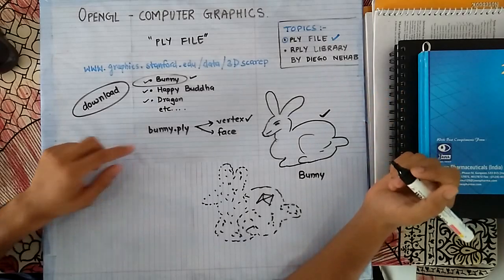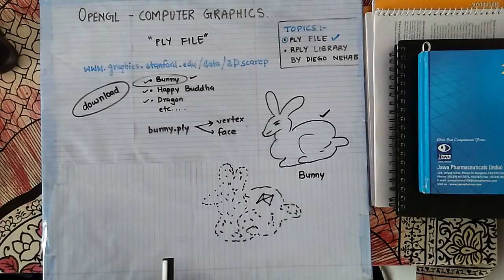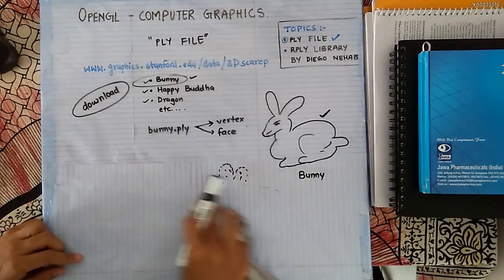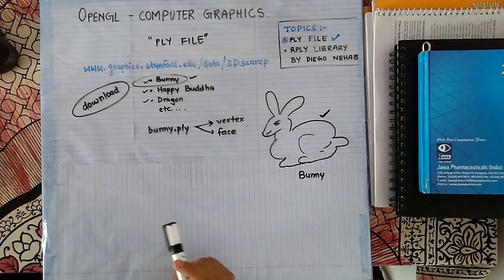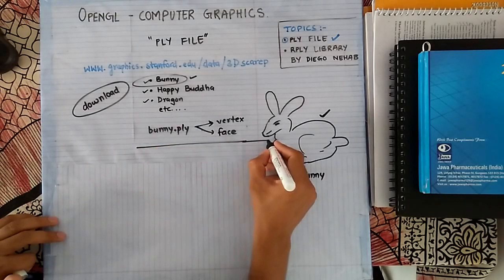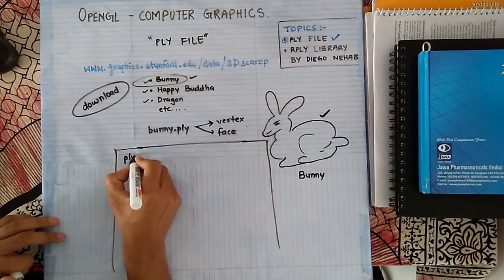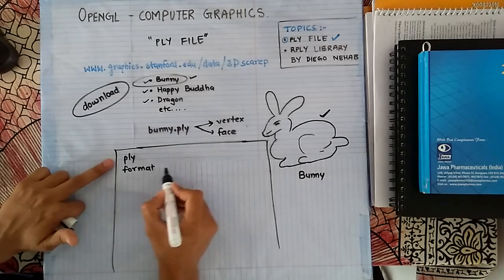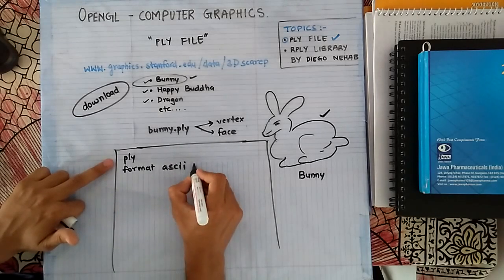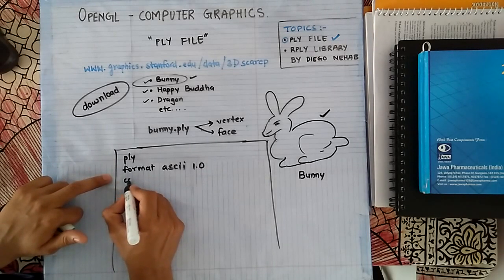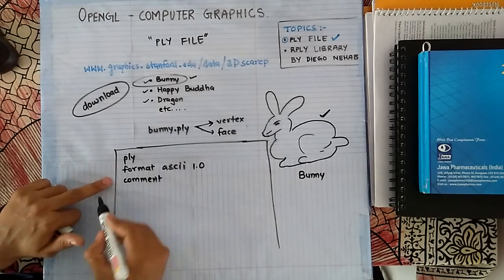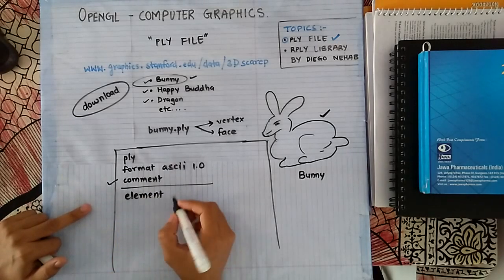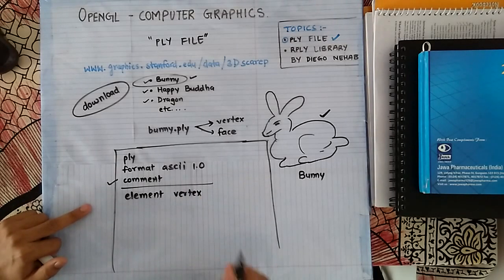To start with, I'll write down the initial lines of the bunny.ply file and we will try to understand them, similarly as we understood the example in our previous lecture. This PLY file also starts with the PLY keyword, which tells the reader that it is a PLY file. The format is ASCII 1.0, then there are some comments which we will ignore. From here we have element vertex — the first element is vertex.